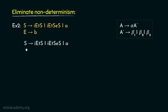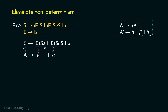Let me illustrate. If we consider S as the generic non-terminal A, then from these two productions, can you figure out the common prefix or alphas? Observe: the string i, e, t, S is present in both productions. So clearly, i, e, t, S are the alphas. We can state the first production as i, e, t, S followed by epsilon. Since alpha and beta belong to V-star — meaning they can be any string of terminals, non-terminals, or even epsilon — we consider epsilon as beta 1, and e followed by capital S as beta 2.